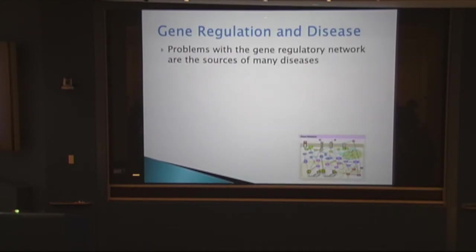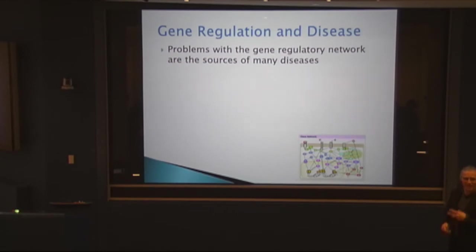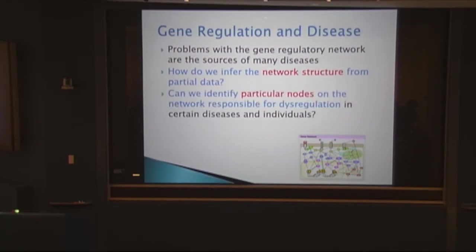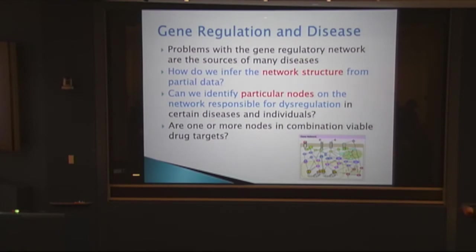Problems with this gene regulatory network are the sources of many diseases — including brain diseases and cancer, where certain parts of the network malfunction and cells divide much more than they should. We want to infer the network structure from partial, messy data, identify particular nodes responsible for dysregulation, and use those as drug targets — if you know which protein the cancer cell depends on, you can knock it out and hopefully kill the cancer.